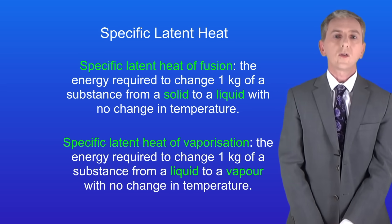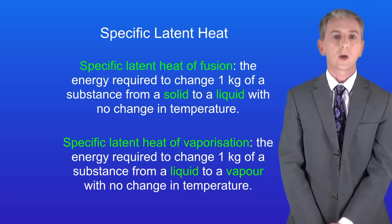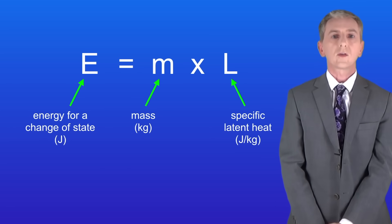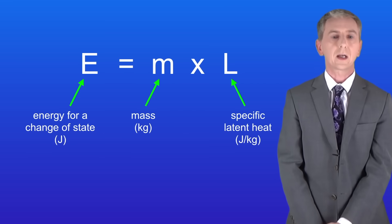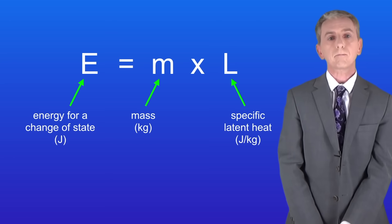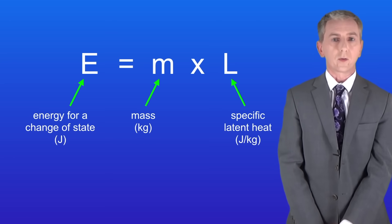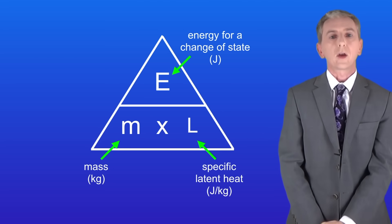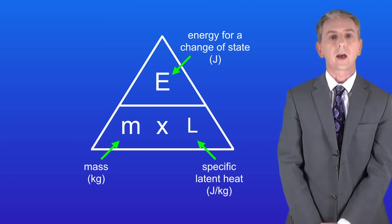We can use the idea of specific latent heat to calculate the energy change when a change of state takes place. We use this equation: the energy for a change of state in joules equals the mass in kilograms multiplied by the specific latent heat. You will be given this equation in the exam, and you'll also be given any values for specific latent heat that you need. Here's a triangle for this equation, but remember you're not given triangles like this in the exam.